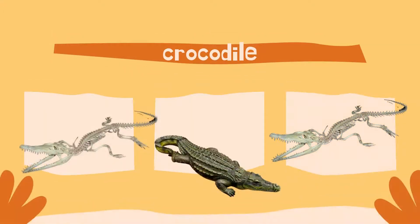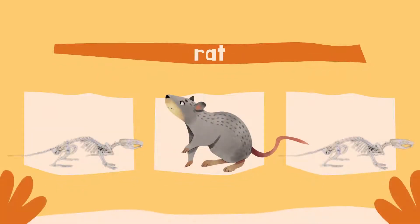Next, crocodile. Wow, the skeleton of the crocodile's jaw is very large and looks very strong. Crocodile skeleton. Next, rat. The skeleton of the rat is very small. This is the picture of the skeleton of the rat. It's really interesting.